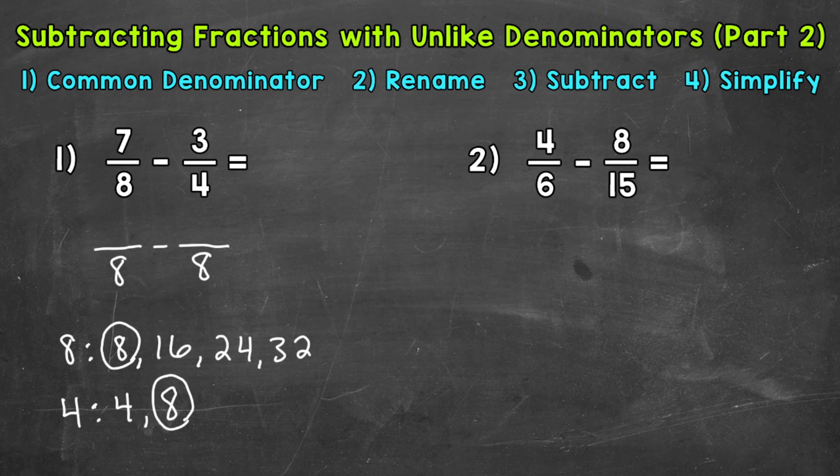Now 7/8 already has a denominator of 8, so I don't need to rename. I can bring that 7 straight down. As far as 3/4, I need to think, how do I get that denominator of 4 to equal the denominator of 8? 4 times what equals 8? Well, I know that 4 times 2 equals 8.